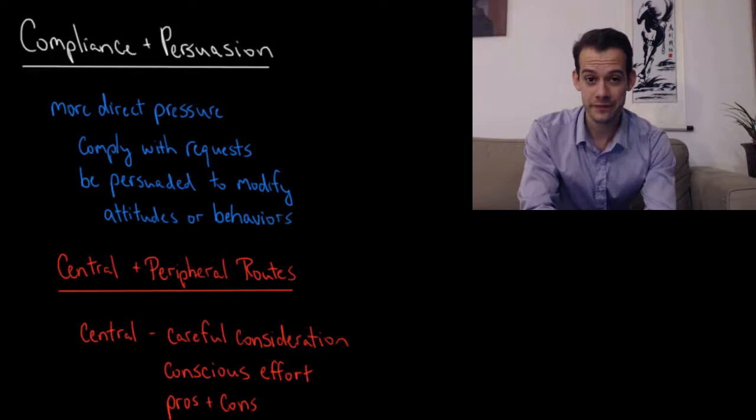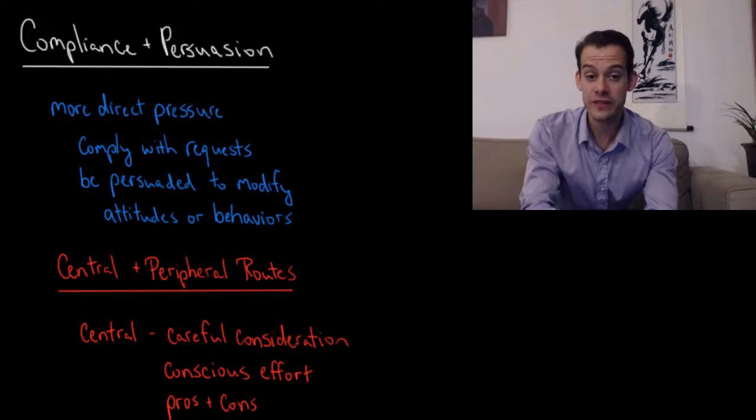Hi, I'm Michael Correa and this is Psych Exam Review. In the previous video we considered conformity which refers to an indirect social pressure to go along with the group's attitudes or behaviors. In this video we're going to consider compliance and persuasion, which are more direct social pressures because these refer to situations where people ask us to comply with a specific request or attempt to persuade us to modify particular attitudes or behaviors.